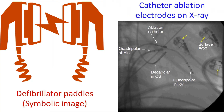Atrial flutter can be treated initially with medications given as injections or tablets. If there is no response, it can be easily terminated by giving a controlled electrical shock with a medical device known as a defibrillator, used with ECG monitoring in the emergency department or intensive care room. If there is any underlying structural heart disease or abnormality in the blood electrolytes, it has to be treated. There is also an advanced form of treatment known as radiofrequency catheter ablation, which can be used to prevent recurrence of atrial flutter in the long term.